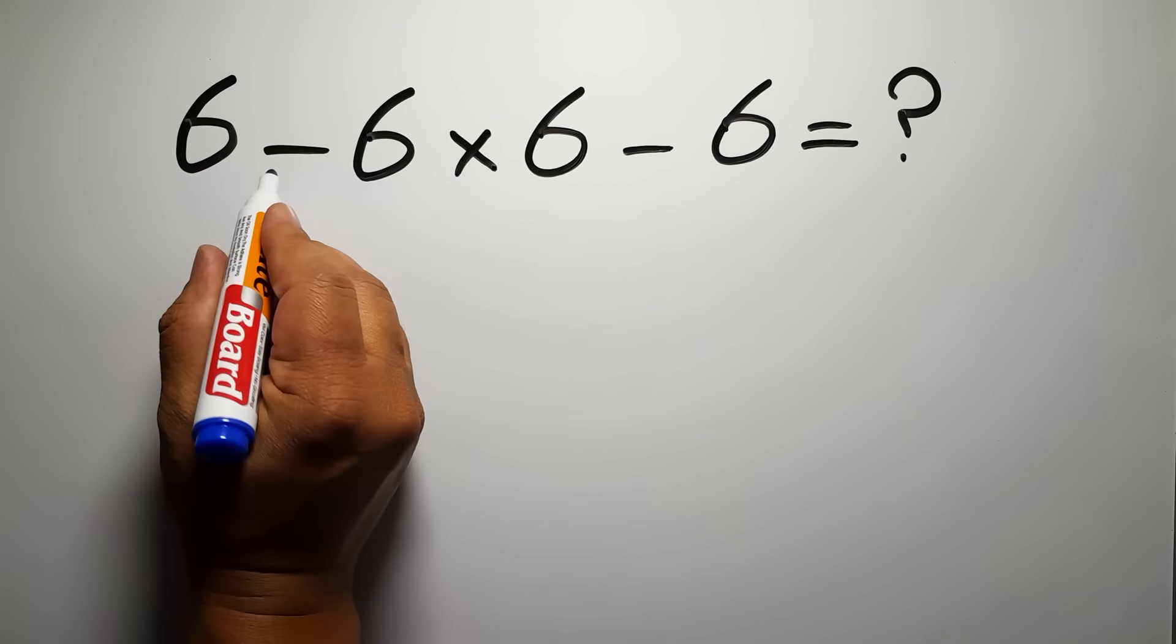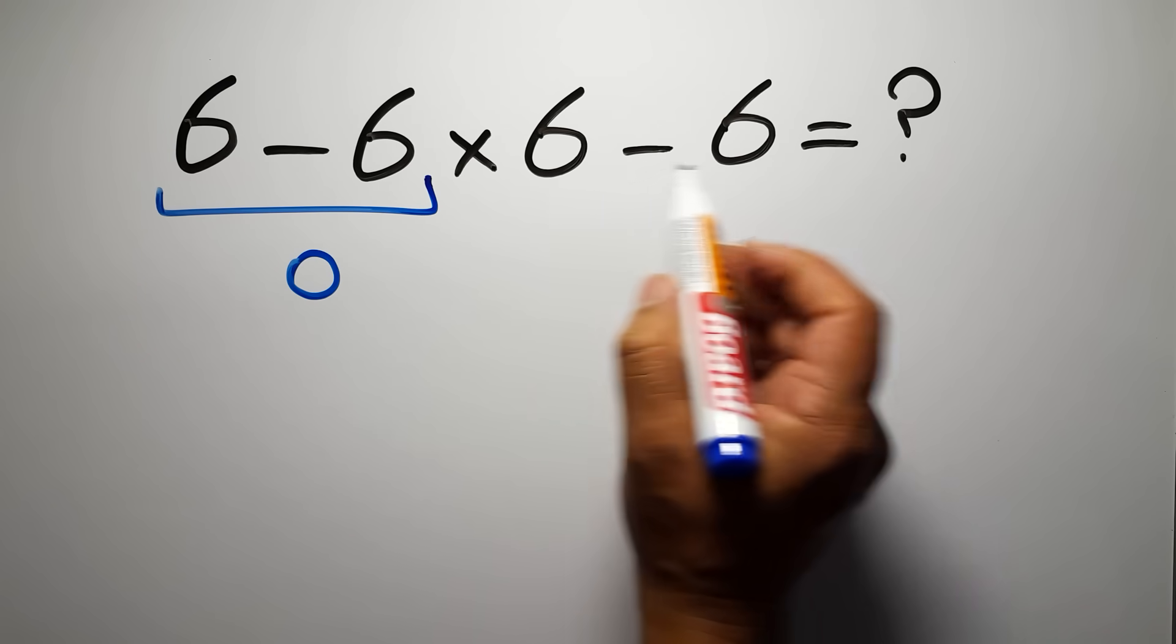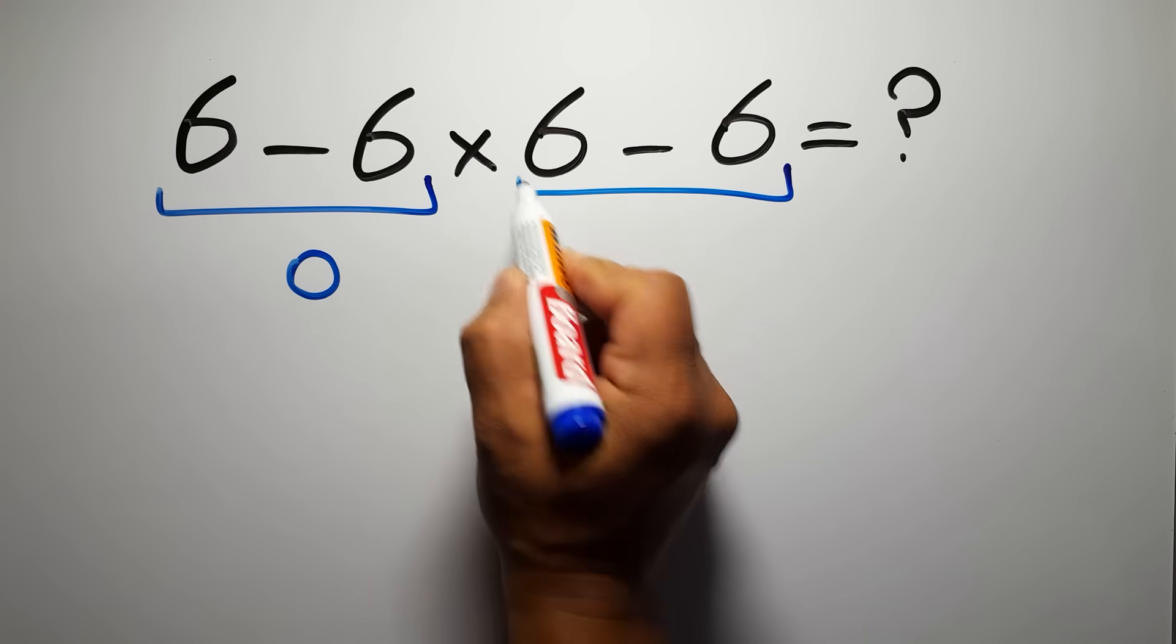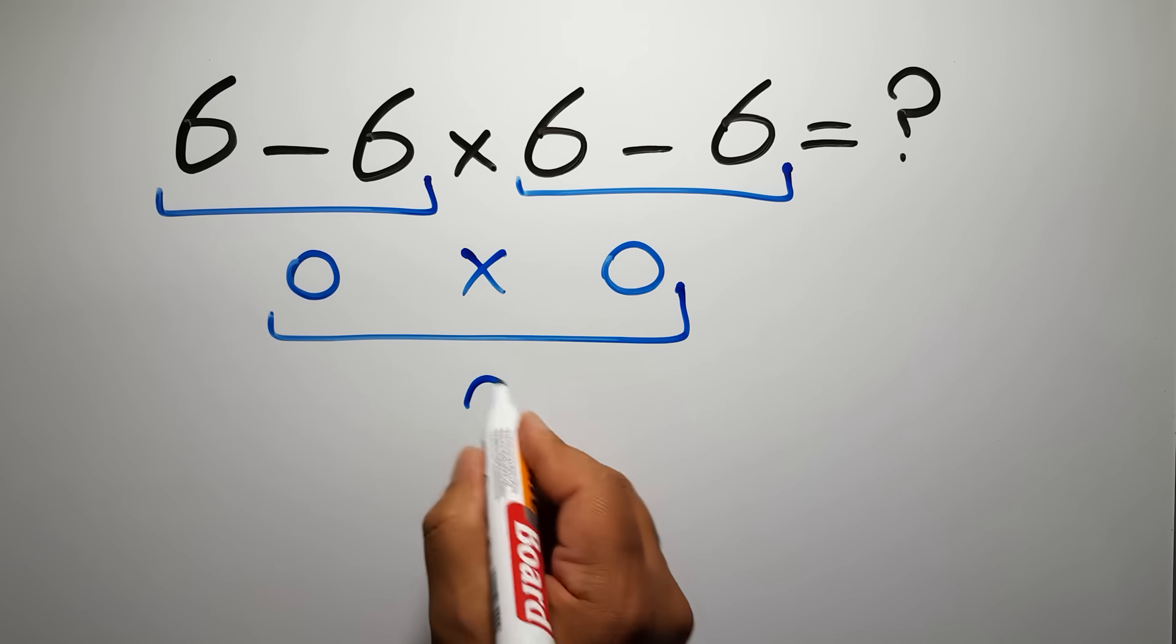Here we have 6 minus 6, which gives us 0, and again here we have 6 minus 6. So 0 times 0, which equals 0.